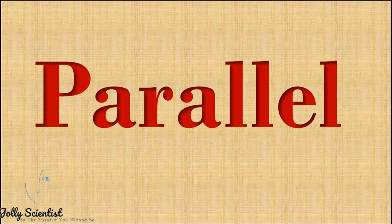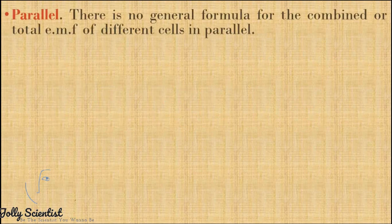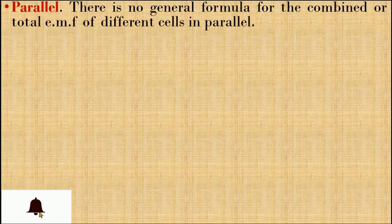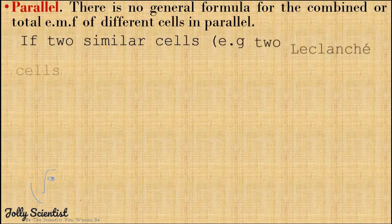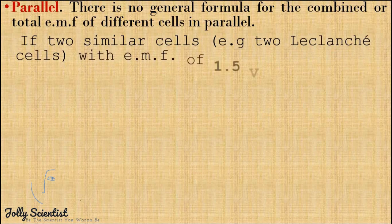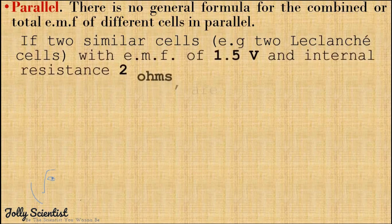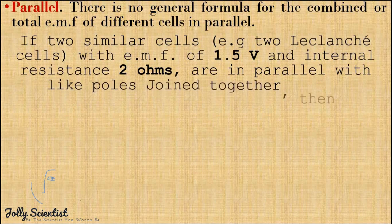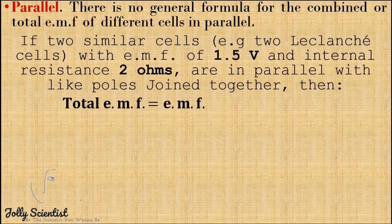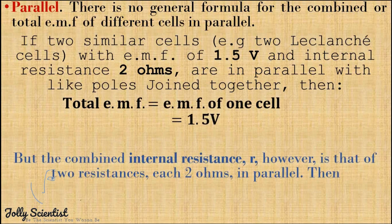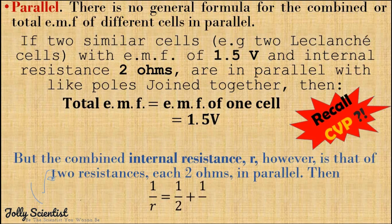In a parallel connection, there is no general formula for the combined total EMF of cells in parallel. If two similar cells — say two cells with EMF of 1.5V and internal resistance 2Ω — are in parallel with like poles joined together, then the total EMF equals the EMF of one cell, which is 1.5V.